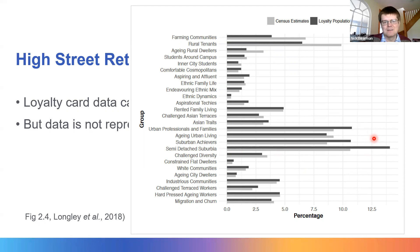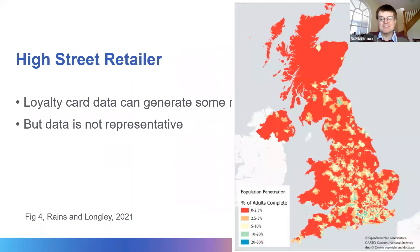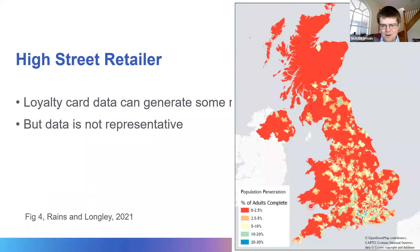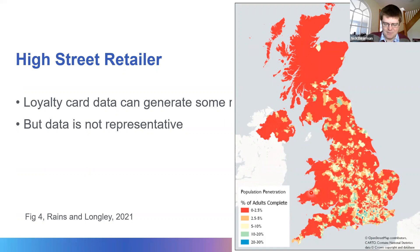The data is also not geographically representative. A map of the UK shows what proportion of adults are in this loyalty card scheme, and it varies quite a lot. In urban centres and suburbia it can be quite high — 20 to 30% — but in some areas it can be very low, as little as 2.5% or less. So not only is it not demographically representative, it's not geographically representative either. But that doesn't mean we can't do useful things with the data — we just need to remember who we're actually capturing.